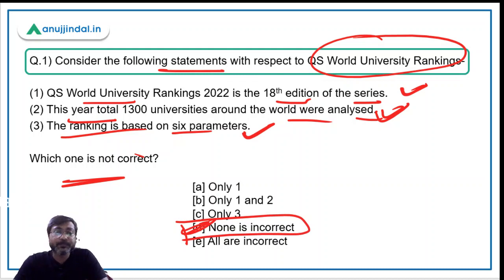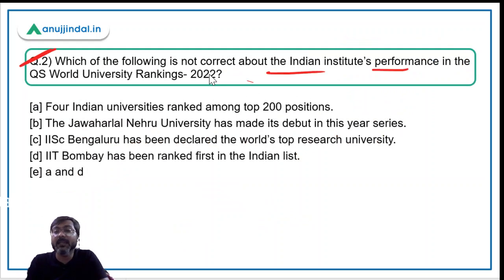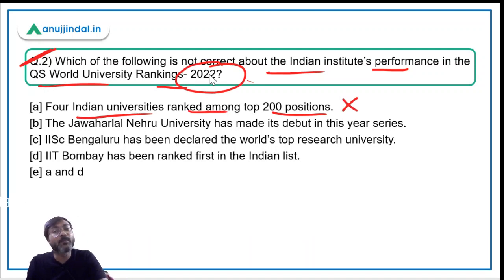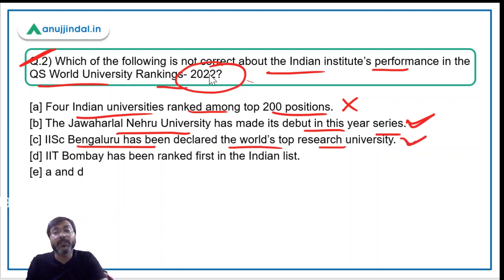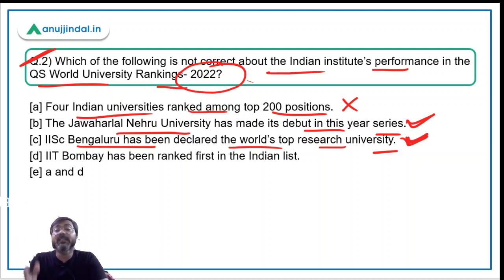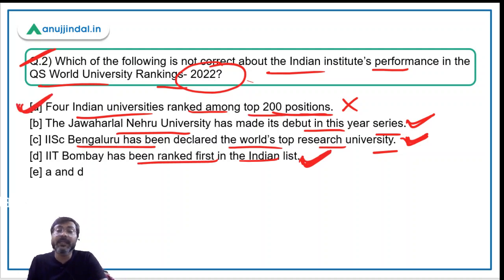Question number two: Which of the following is not correct about Indian institutions' performance in the QS World University Rankings 2022? Option A states four Indian universities ranked among the top 100 — this is incorrect, as only three did: IIT Bombay (177), IIT Delhi (185), and IISc Bangalore (186). JNU made its debut this year — correct. IISc Bangalore has been declared the world's top research institute — correct. IIT Bombay ranked first in India — correct. So the correct answer is option A.